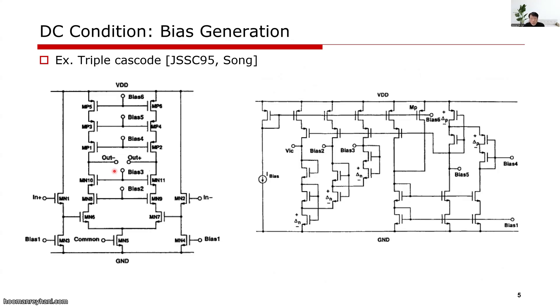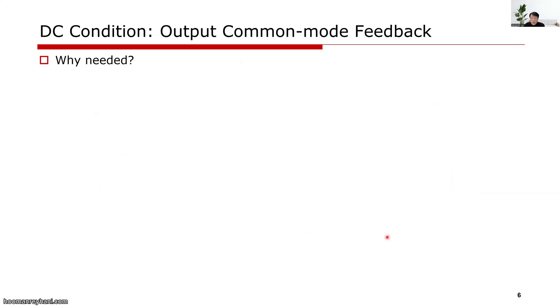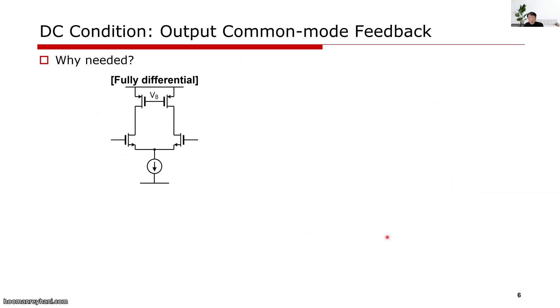So in the course, we will discuss what the desired bias voltages are for the transistors and how to generate them. In a fully differential circuit, we must have a common mode feedback circuit.